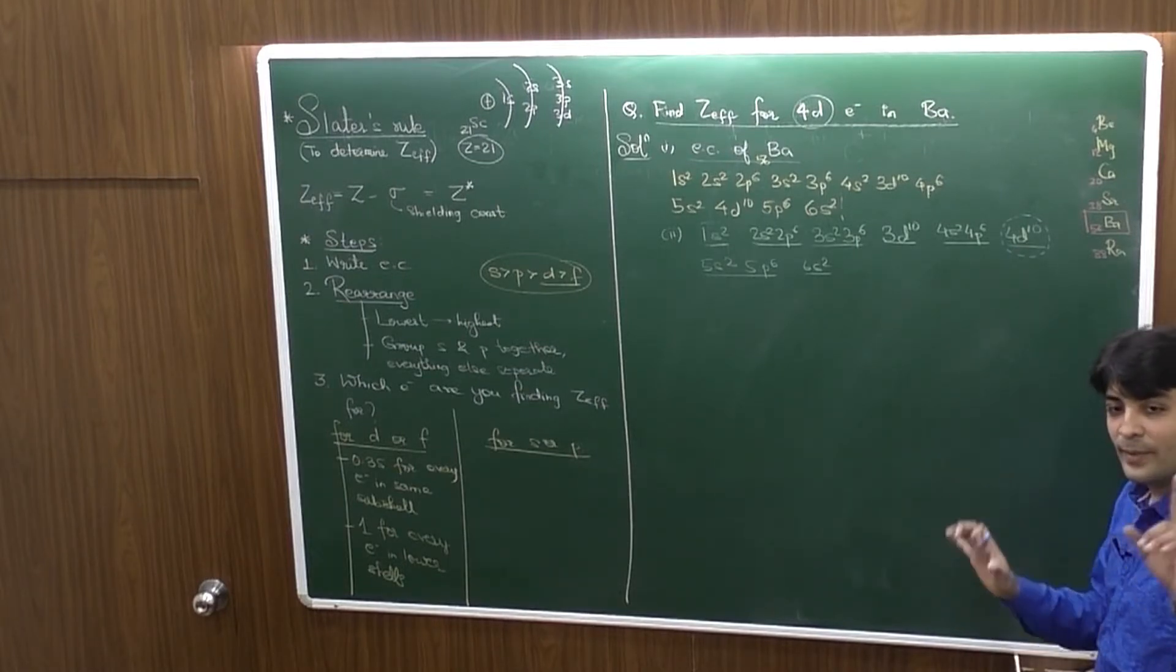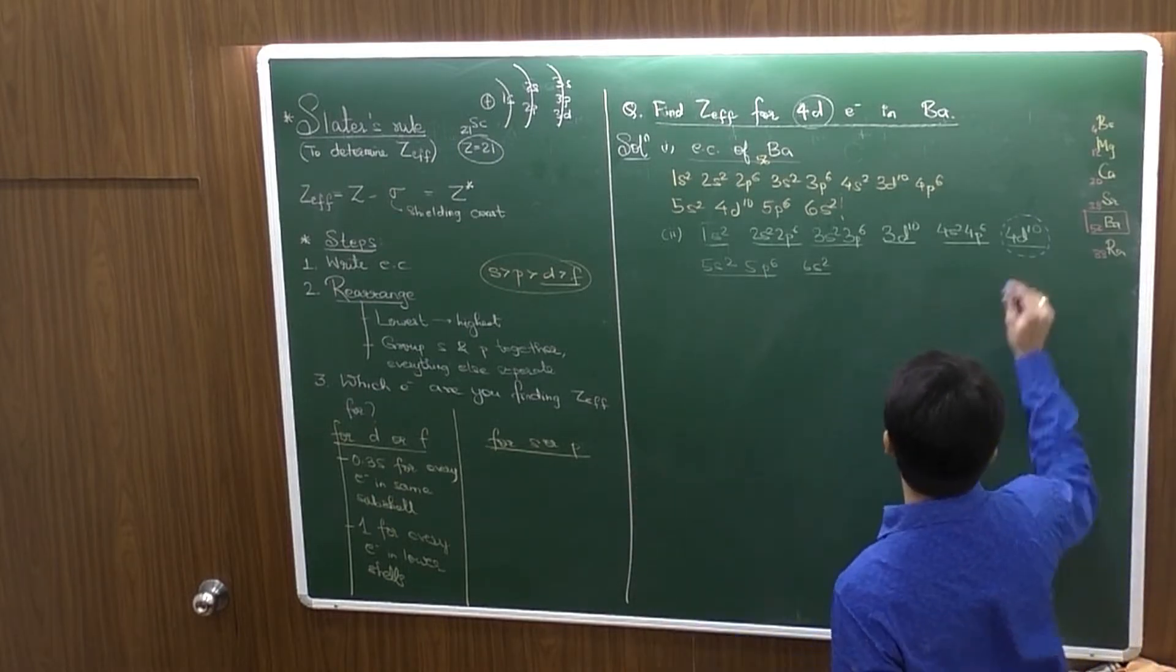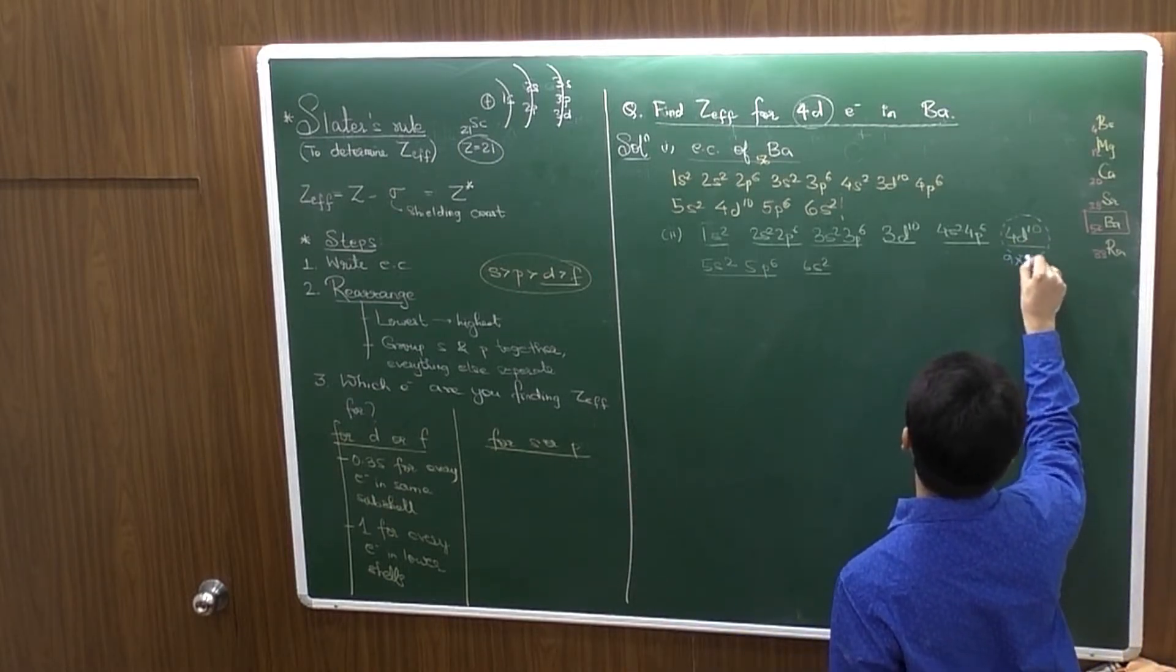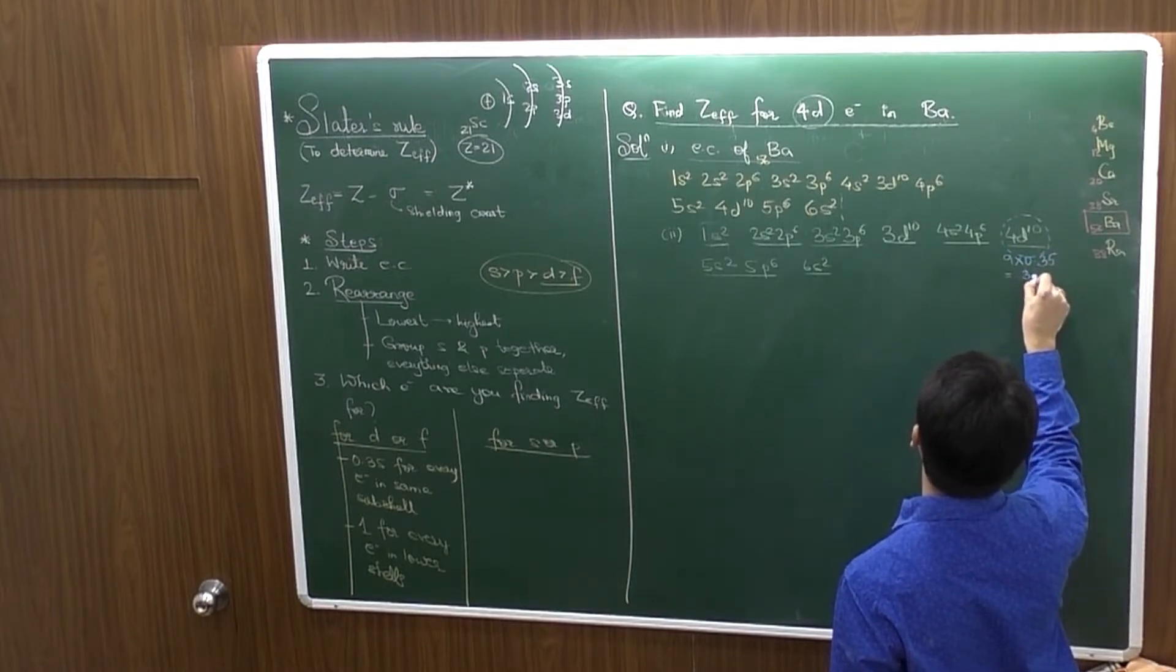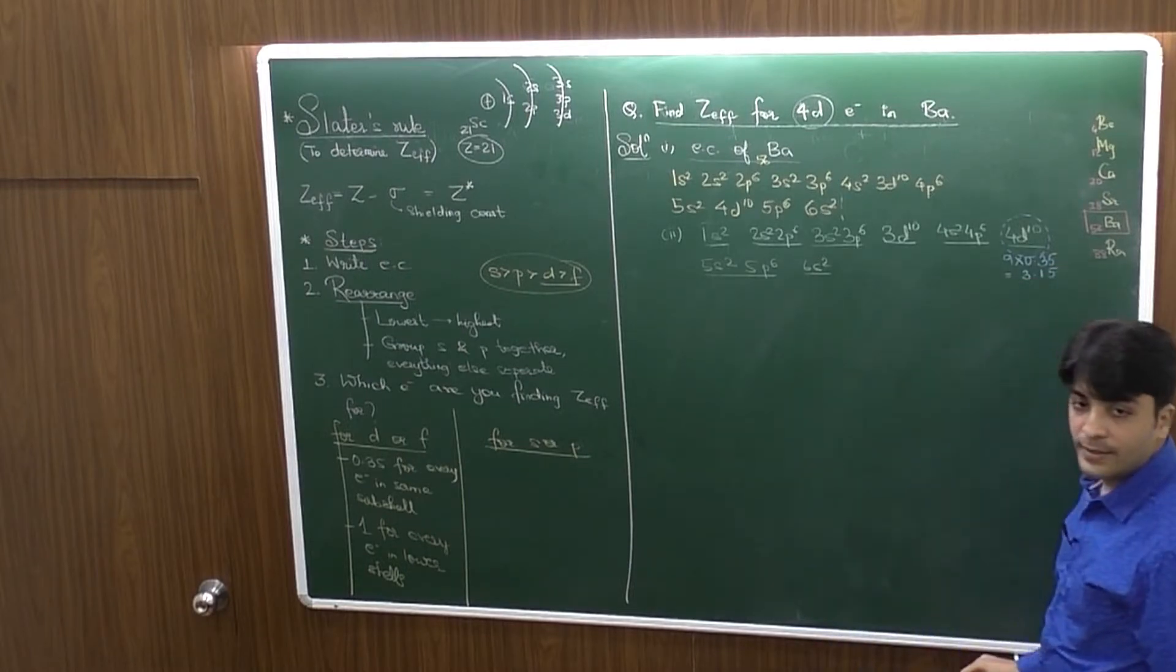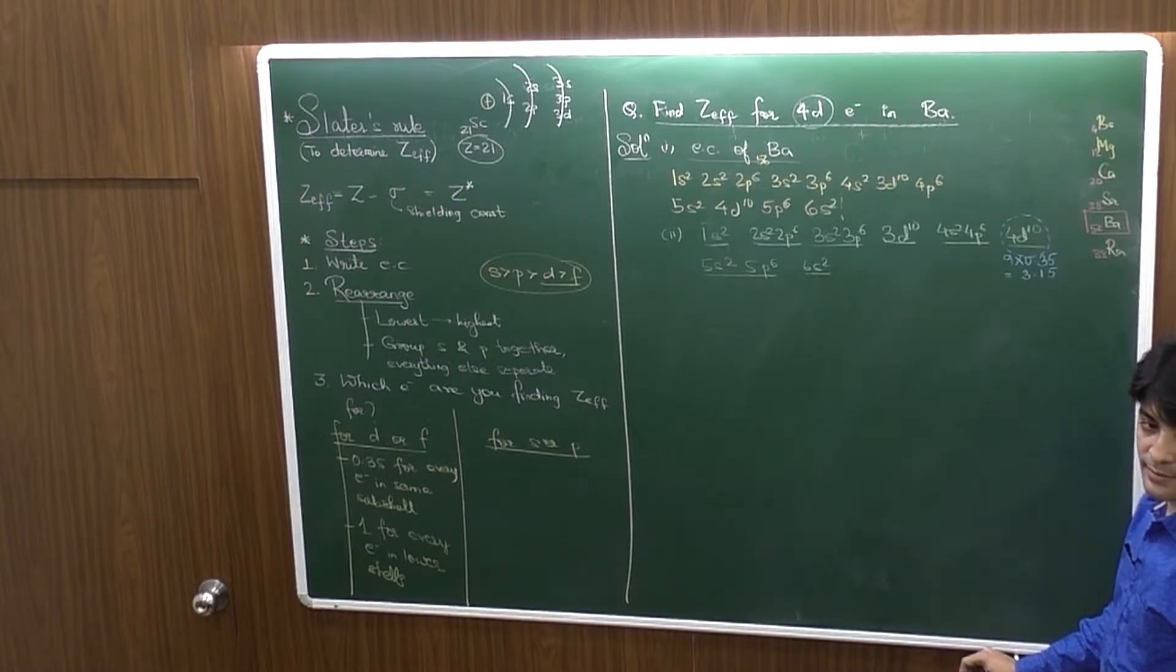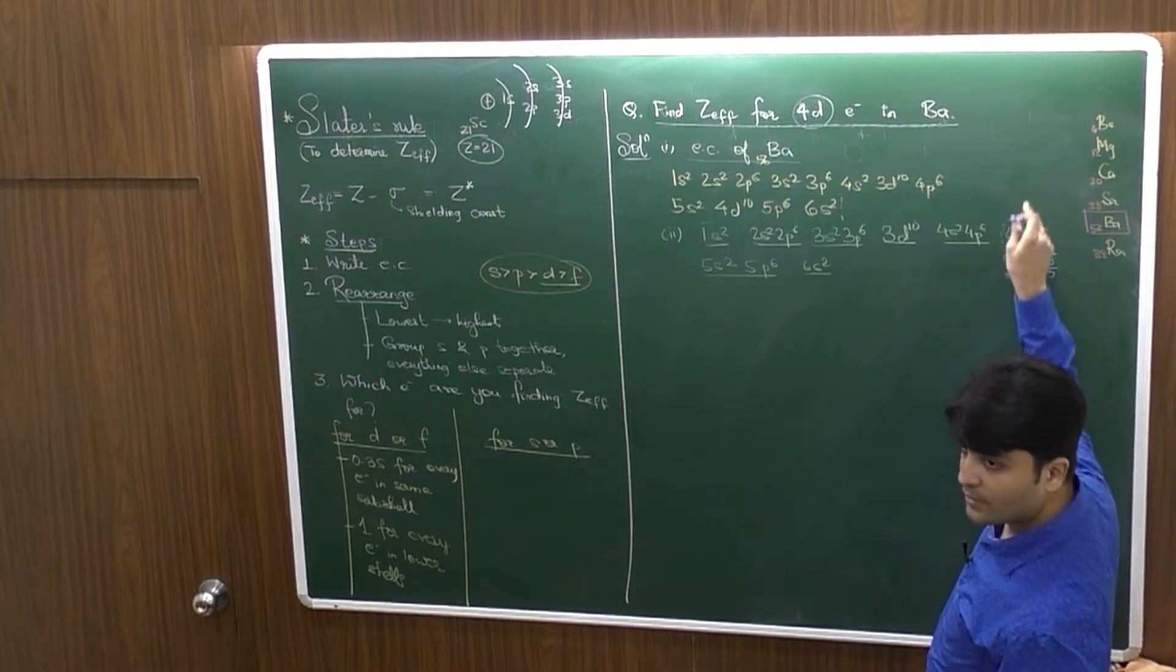We are looking at Zeff for only 1 electron out of them. So, remaining 9 electrons will also have the effect on that electron in consideration. 9 electrons in the same sub shell would be multiplied by 0.35 to give a value of 3.15.